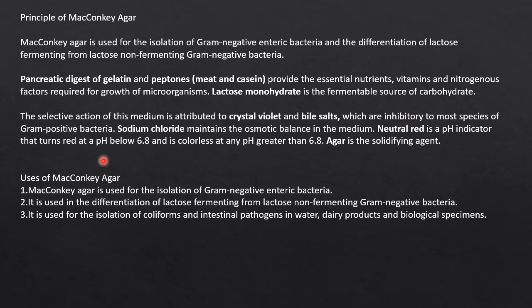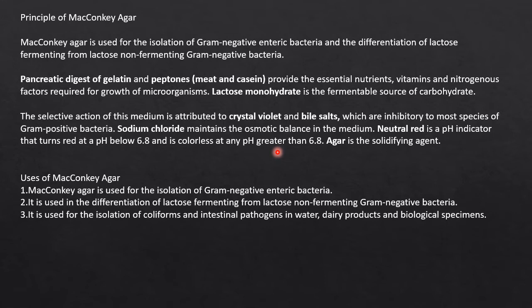Crystal violet and bile salts inhibit most species of gram-positive bacteria, allowing selective study of gram-negative bacteria. Sodium chloride maintains the osmotic balance in the medium. Neutral red is the pH indicator — it turns red at pH below 6.8 when sugar is fermented, and is colorless at pH above 6.8. Agar is the solidifying agent; remove it if you want broth.